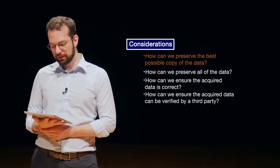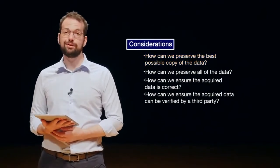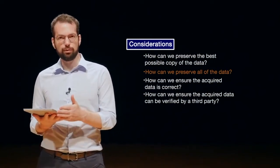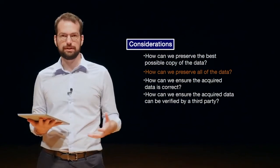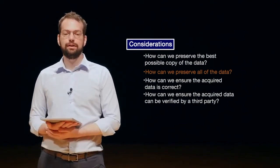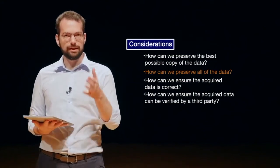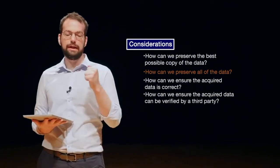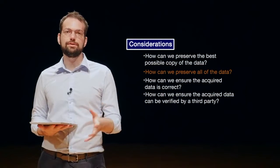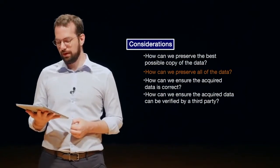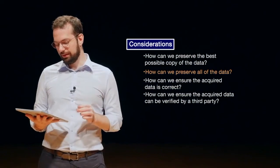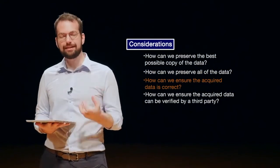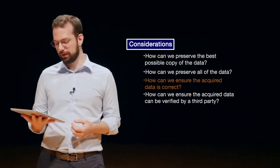Next, how can we preserve all of the data? In many situations we might not actually be able to acquire all of the data from a suspect system because of some technology limitation or the way things work. So think about what data you're trying to collect — how do we make sure we can preserve all of it, and if we can't, why not? What is the issue that stops us? And how can we make sure that the data that has been acquired is correct — meaning exactly the same as the suspect or original data we're copying from?